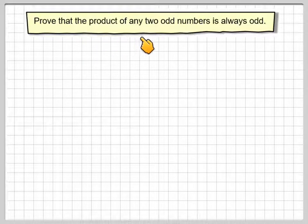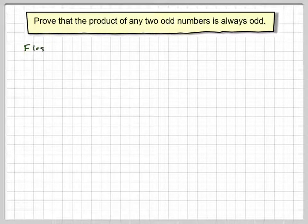Okay, prove that the product of any two odd numbers is always odd. Okay, so let's first try some examples.